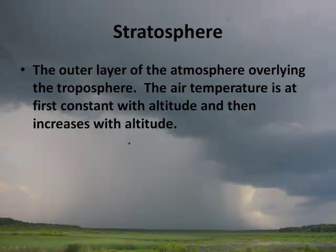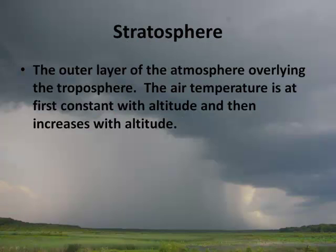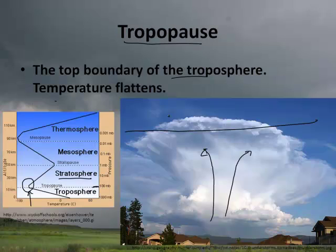The stratosphere is the next layer overlying the troposphere. The air temperature is at first constant with altitude and then increases with altitude — you can see in the diagram how it stays the same and then the temperature rises.